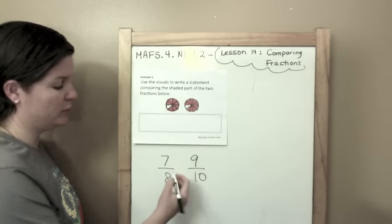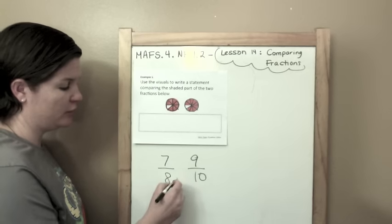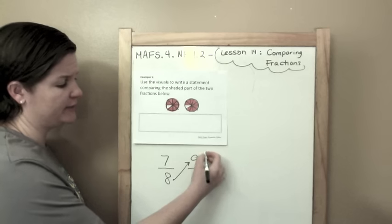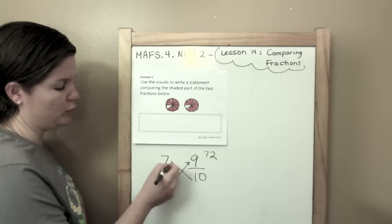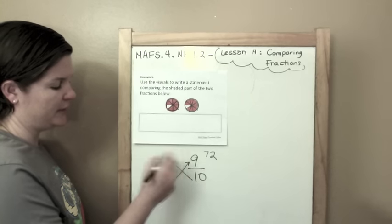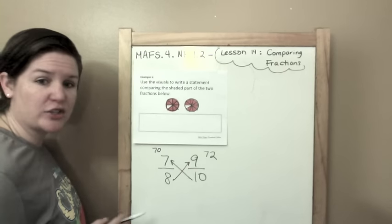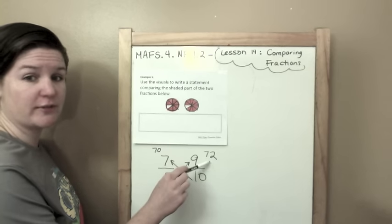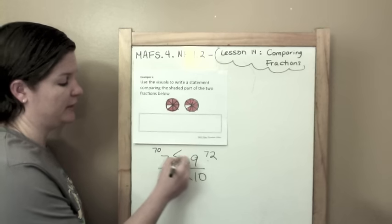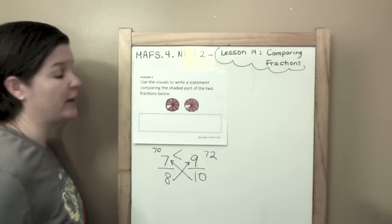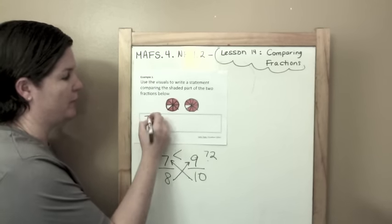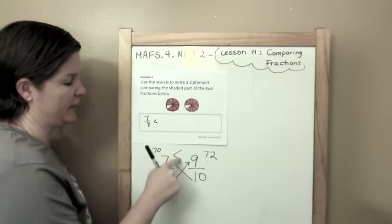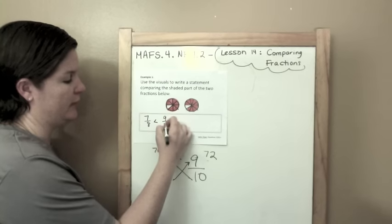Here's my fancy trick for you. Start from the bottom, shoot an arrow up across. Eight times nine is 72. Take an arrow, shoot it up. Ten times seven is 70. So which fraction is greater, the one under the 70 or the one under the 72? Well, 72 is greater. That means that 9 tenths would be greater because that's the fraction under it. So my comparison would be 7 eighths is less than 9 tenths.